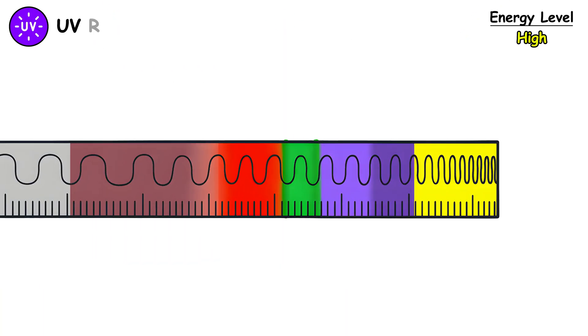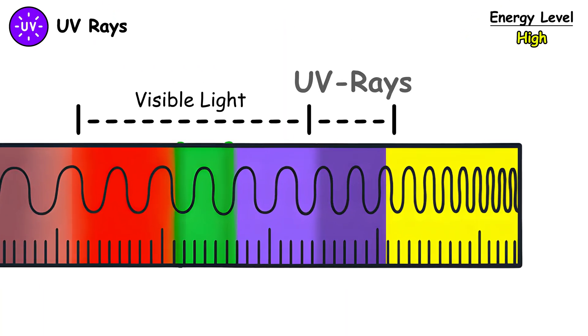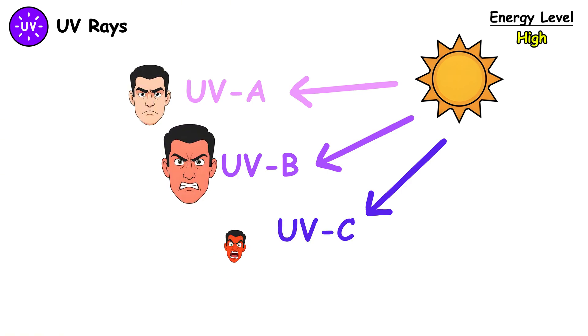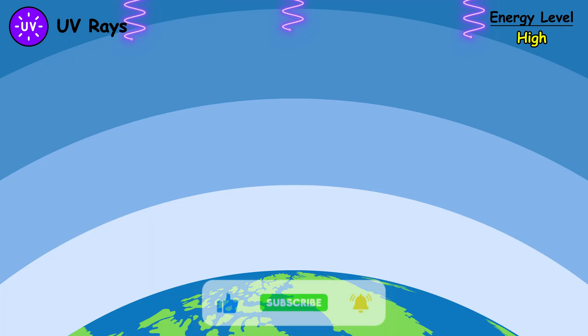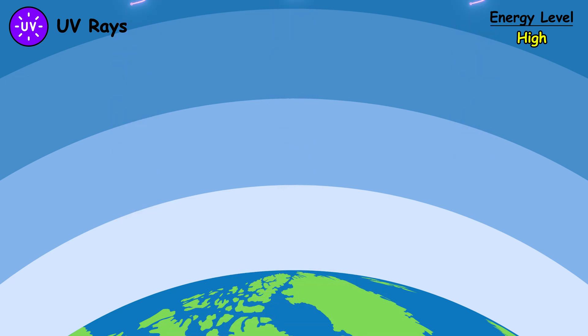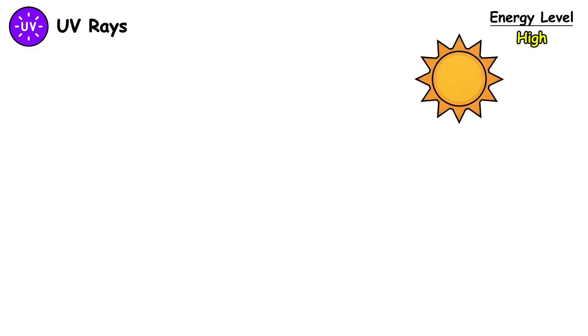UV rays exist just beyond violet in the electromagnetic spectrum. The sun releases three types: UVA, UVB, and UVC, each with different properties and dangers. Fortunately, Earth's atmosphere blocks the most lethal varieties, but what gets through still packs a serious punch.